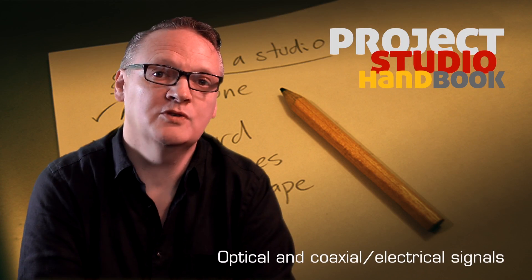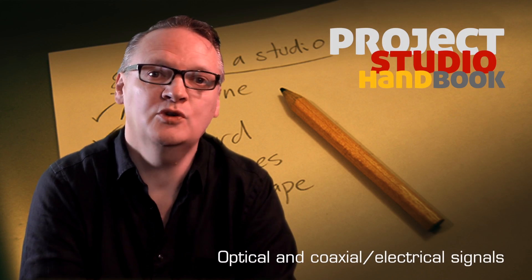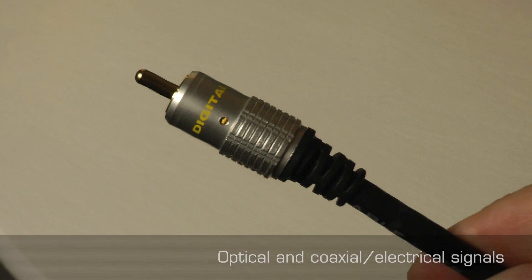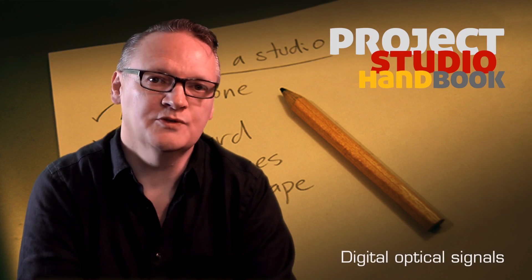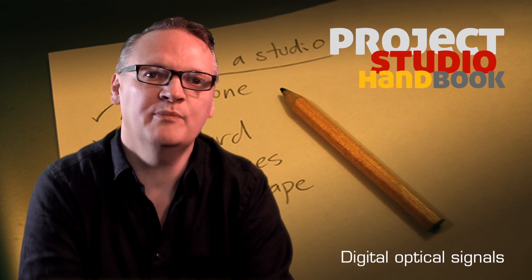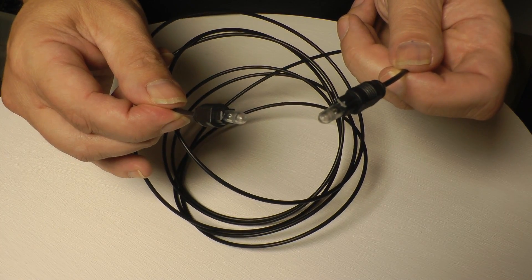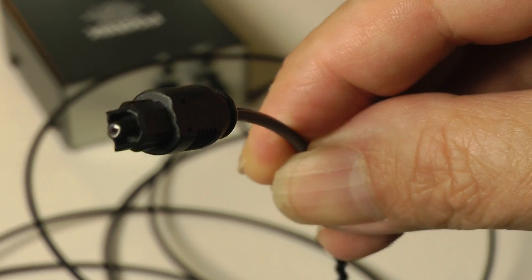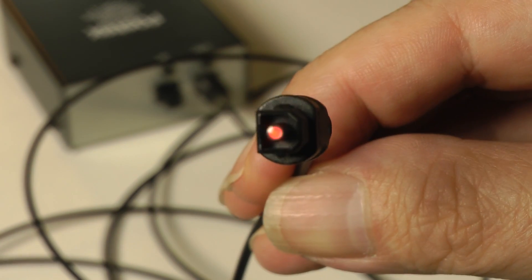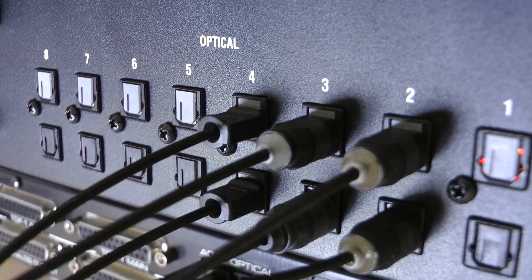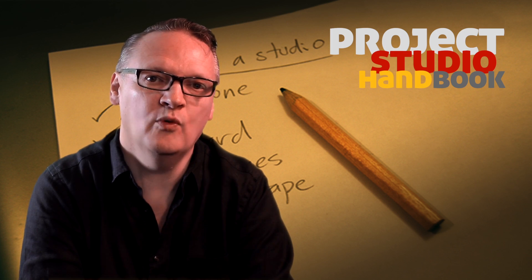Digital audio signals can be divided into two categories: optical and electrical. Optical signals are transmitted with fiber optic TOS-link leads. The signal is sent as light and is therefore inaudible until converted by a receiving device. They are commonly used to send or receive one of two optical signal formats.